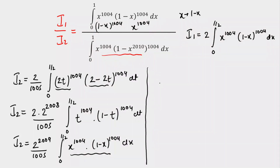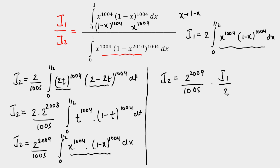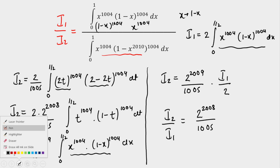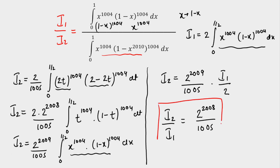Now I write i2 in terms of i1. i2 equals (2 to the power 2009 over 1005) times the integral from 0 to 1/2, and that integral equals i1 over 2. So i2 upon i1 equals 2 to the power 2008 divided by 1005. This is our final answer. As you can see, I got the ratio without even calculating the individual values of i1 and i2.